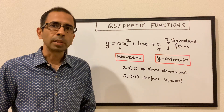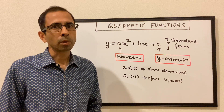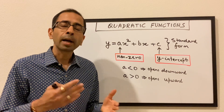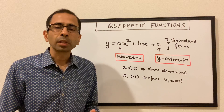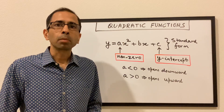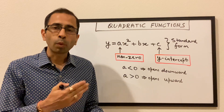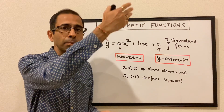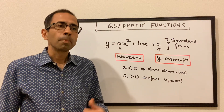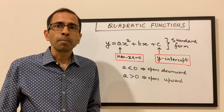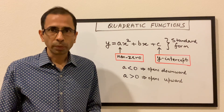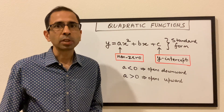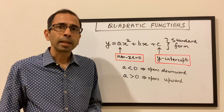Welcome to the next session of the function series. In this episode we're going to talk about quadratic functions. Earlier we discussed that when the degree of the function or the highest power of x is one, it's a linear function with the shape of a straight line — y = mx + b, with positive or negative slopes. Now, when the degree is two, it becomes a quadratic function, and the shape is like a parabola or a necklace.